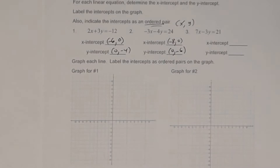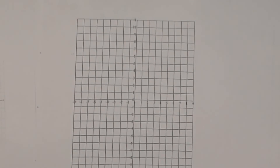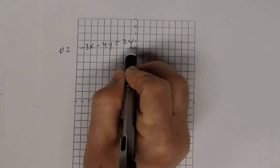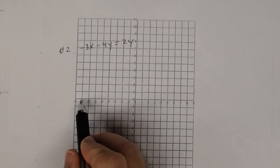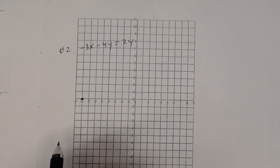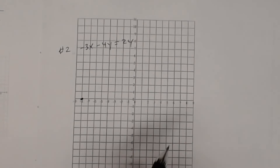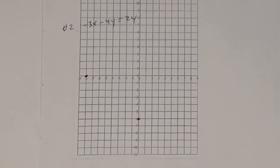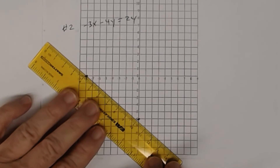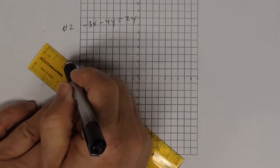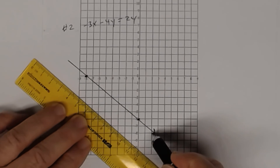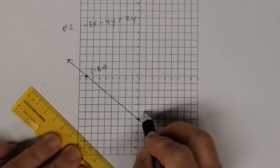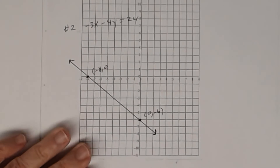I'm going to use the larger graph. For number 2, the equation is negative 3x minus 4y equal 24. The x-intercept is negative 8, 0 — that's where the graph crosses the x-axis, so that's one point on this line. The y-intercept is 0, negative 6 — that's where the graph crosses the y-axis. Using a ruler to draw a straight line — don't forget to draw your arrows. Label the points: negative 8, 0, and 0, negative 6. That was number 2.